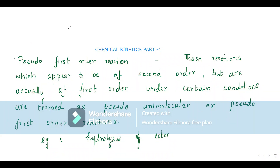Welcome back to Tales of Chemistry. In the Chemical Kinetics previous episodes we discussed what is order of a reaction, how to calculate the order by integrated rate law, and how the rate constant is calculated by the integrated rate law equation. Now in today's episode let us study certain more terms like pseudo first order reaction.